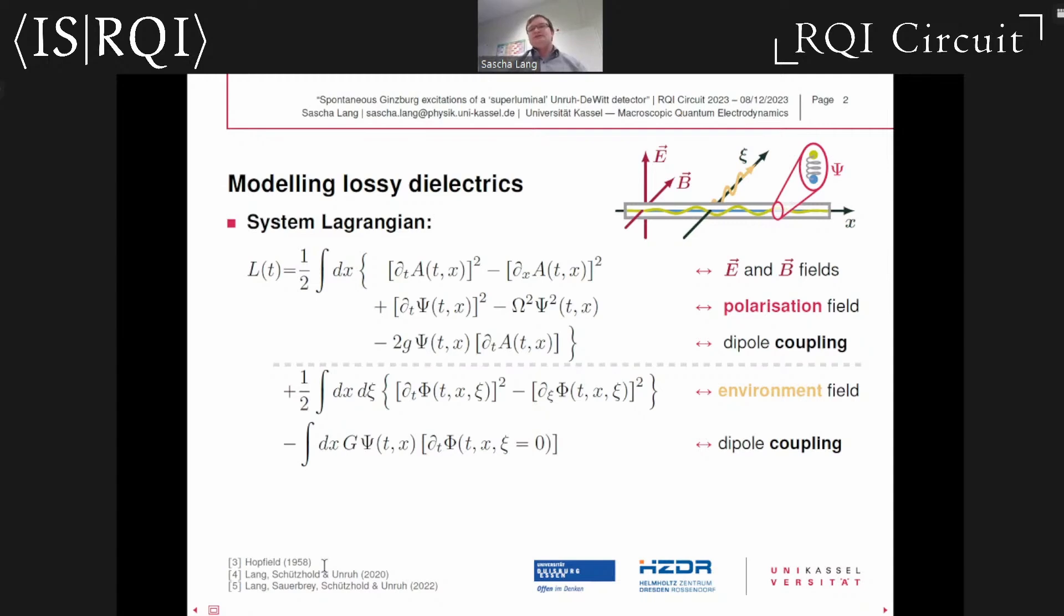We added dissipation to this initially non-dissipative model by turning all those medium oscillators into damped oscillators. We achieved this by coupling them to a scalar environment field phi which we allow to propagate in some perpendicular xi direction, and this field can carry away energy and information. By assuming this field to propagate in the xi direction only, we assume an anisotropic dispersion relation. Apart from that, it's just a two plus one dimensional scalar field, and we couple this field in a dipole approximation to the medium polarization with dissipation strength capital G.